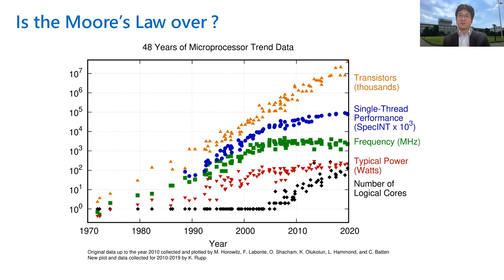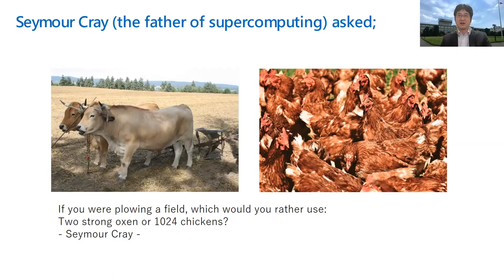We can see the number of logical cores — the black dots — is increasing. So we are having more and more cores, but each core's performance is not increasing. This reminds me of what the late Seymour Cray, the father of supercomputing, asked: if you were plowing a field, which would you rather use — two strong oxen or 1024 chickens? Fundamentally, he asked: do you want more and more cores — can you handle it and use them efficiently to gain performance? He believed two oxen is more efficient in many cases, and that's why he designed vector computers.